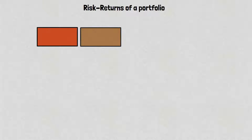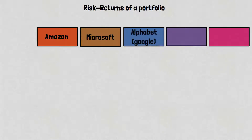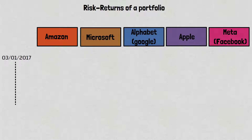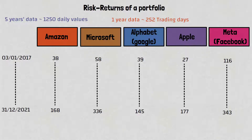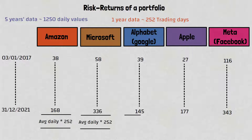Let's look at how risk and returns are calculated for the portfolio. Let's say you have 5 stocks in your portfolio: Amazon, Microsoft, Alphabet or Google, Apple, and Facebook. For each of these stocks, you will have a daily opening or closing price, and from there you can calculate daily returns for each stock. If your dataset has 5 years of data, that would be a bit more than 1,250 daily return values, because each year has approximately 252 trading days. The annual returns can be calculated by averaging the daily returns over the whole 5-year period and then multiplying by 252, because the average is still a daily return and needs to be scaled to the annual level.